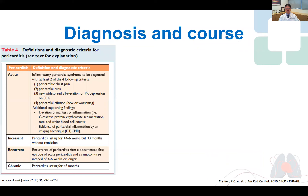The diagnosis of pericarditis based on the ESC guidelines requires two out of the four criteria of pericarditis chest pain, pericardial rub, new ECG changes, and new or worsening pericardial effusion. However, the additional supportive findings are particularly helpful as they appear to be more objective, including elevated inflammatory markers such as CRP, ESR, and white cell count, as well as imaging evidence of pericardial inflammation, particularly with cardiac MRI.